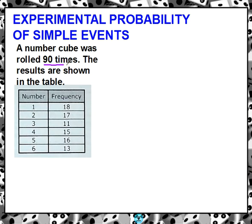It says the number cube was rolled 90 times. The results are shown in the table. So just a hint, any time that you see something about results being shown, you probably can tell that that's going to be experimental. When they're giving you results, when they're giving you numbers that have already been done or an experiment that's already been done, that's probably going to be experimental. And I guarantee you that theoretical answer will be there. So you have to be really careful.